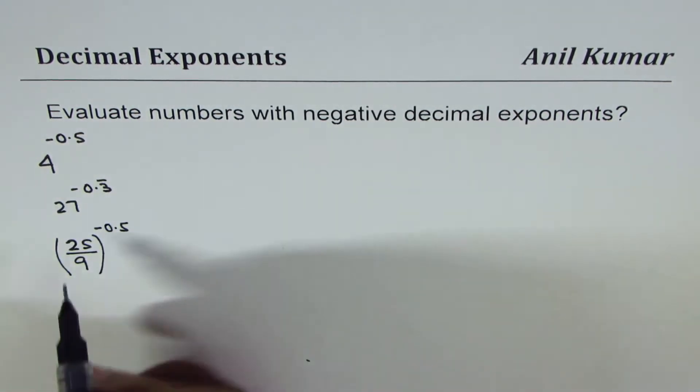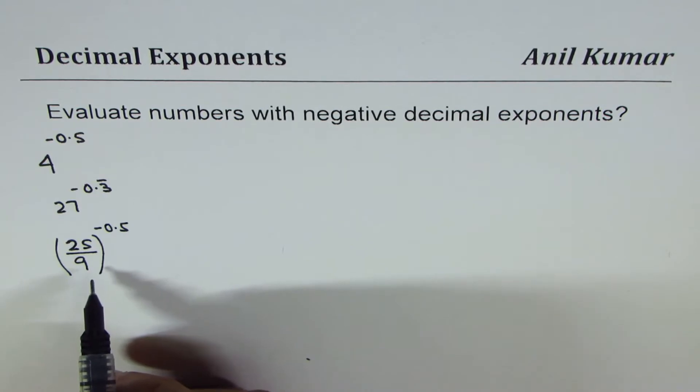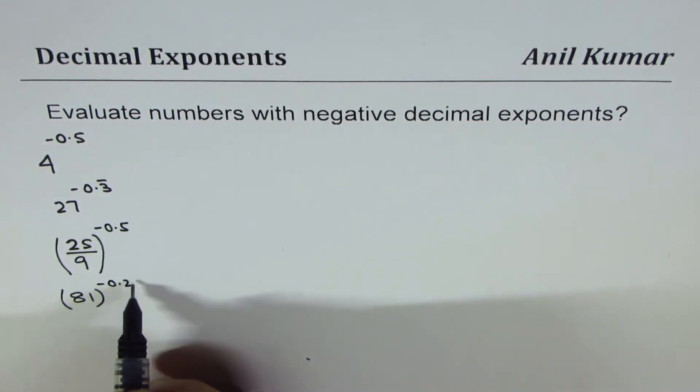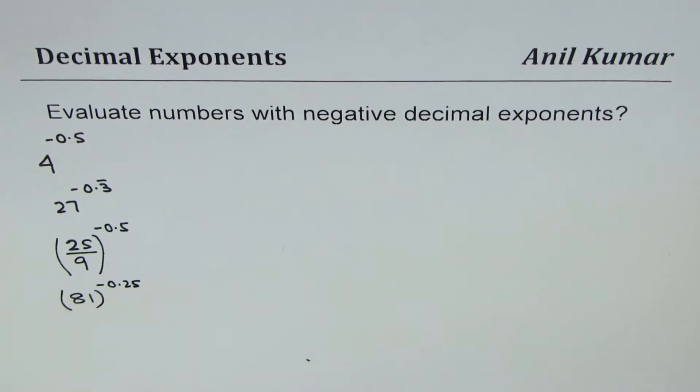So these are a few examples. Let me take to the power of 0.25 also, which is like the fourth root. So let's take 81 to the power of minus 0.25. You can always pause the video, answer these questions, and then look into my suggestions.